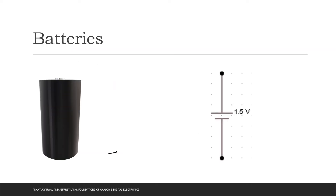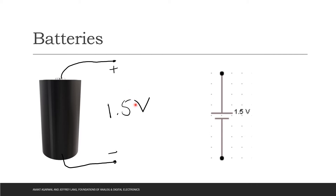An electronic device requires a source of energy, and usually it comes from an internal chemical reaction in batteries. This is the symbol for a battery, and this is the actual battery with a value of the usual 1.5 volts. In a battery, it is important to know its nominal voltage, the total stored energy, and its internal resistance.